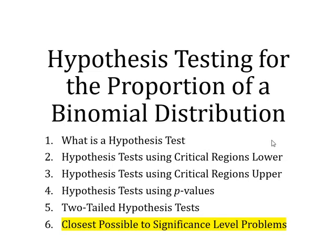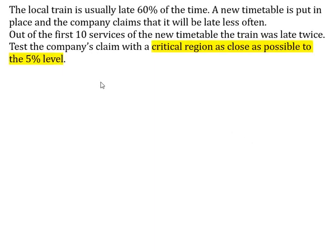Hello folks, welcome to this final video on hypothesis testing for the proportion of the binomial distribution. In this video we're going to focus on problems where we're asked for critical regions that have probability closest possible to the significance level. Let's go straight on to an example. The local train is usually late 60% of the time; a new timetable is put in place and the company claims it will be late less often. Out of the first 10 services, the train was late twice. Test the company's claim with a critical region as close as possible to the 5% level.